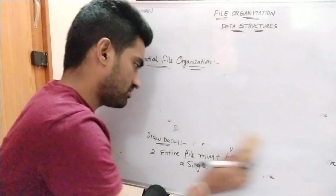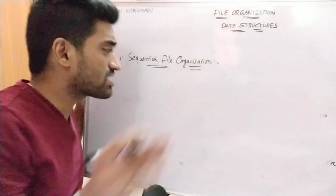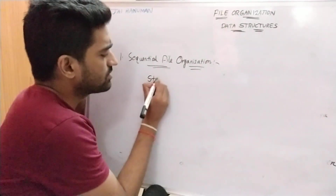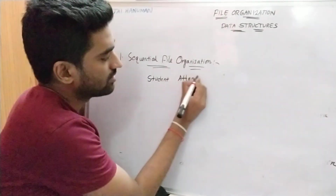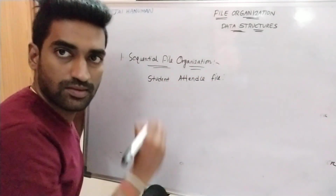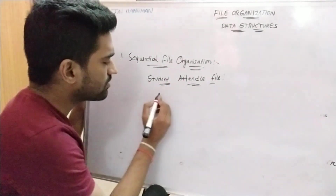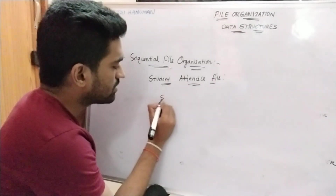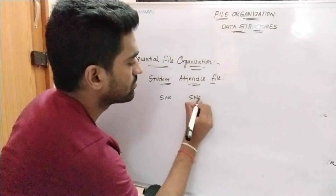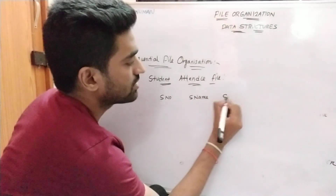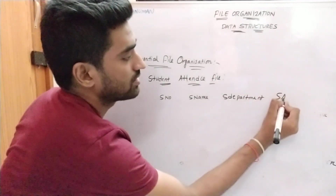There are several real-time examples for sequential file organization. For suppose, consider a student attendance file. The student attendance file contains: student number, student name, student department, and student attendance.